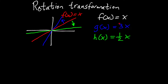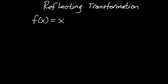But we could have a negative number in front of the x. Let's take a look at what happens there and what sort of transformation this is called. For our third and final type of transformation, we have a reflecting transformation, or a reflection transformation.